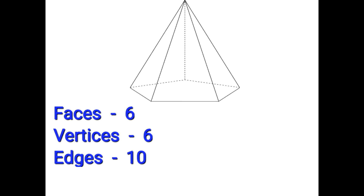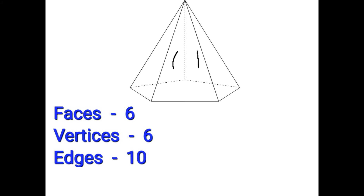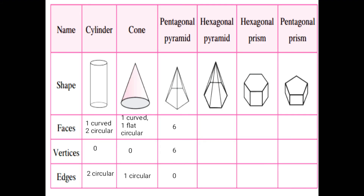If you can't understand how to count the number of faces, I will teach you again. Faces — this triangle is the front side, then this and this: 3 faces. Then backside, this one and this one: 5 faces. And this is 6 faces. Pentagonal pyramid is on the third column; write the answers on the third column.